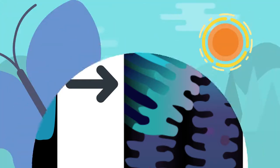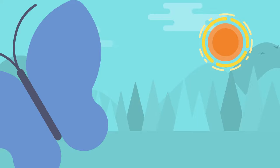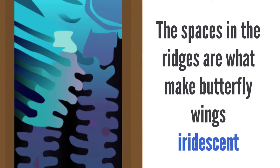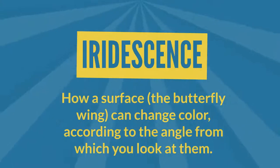When light hits the wing, it goes through multiple layers of these scales. This makes it reflect many times, and the combination of all these reflections gives the butterfly wings their shiny blue color. The reflection and the spaces between the ridges are what makes the butterfly wings iridescent, which is how the butterfly can change color according to the angle from which you look at them.